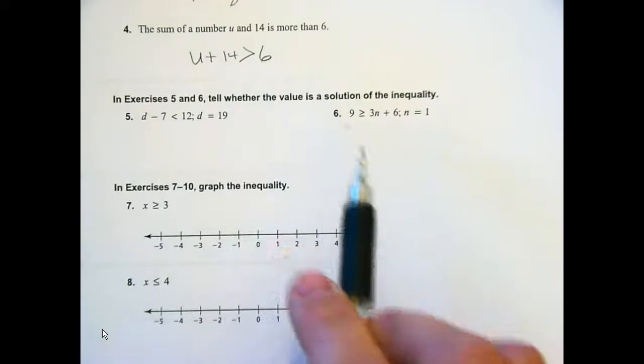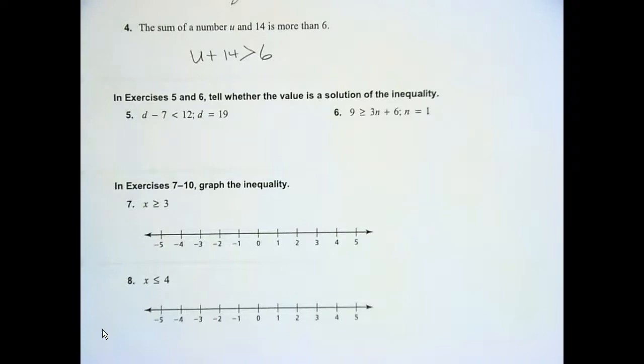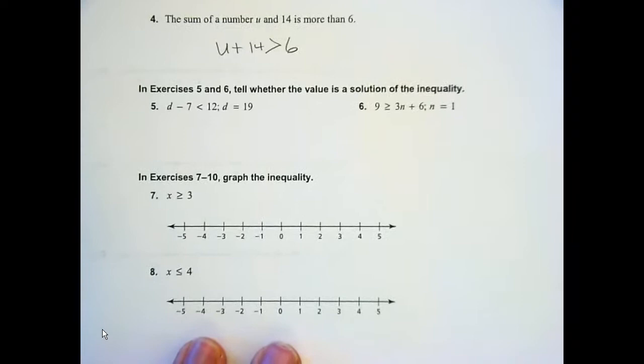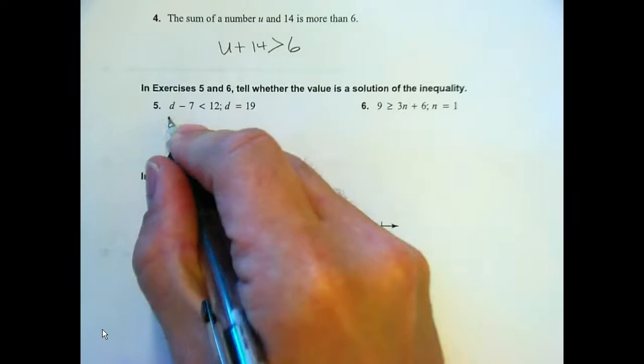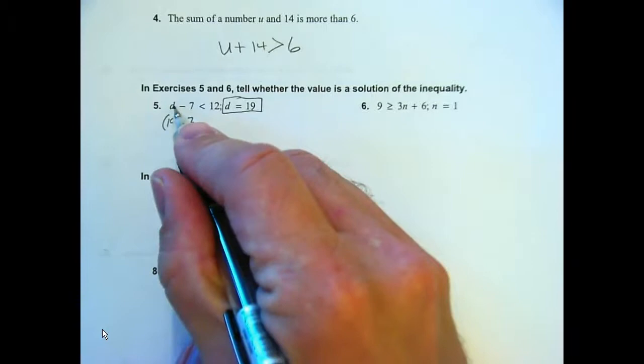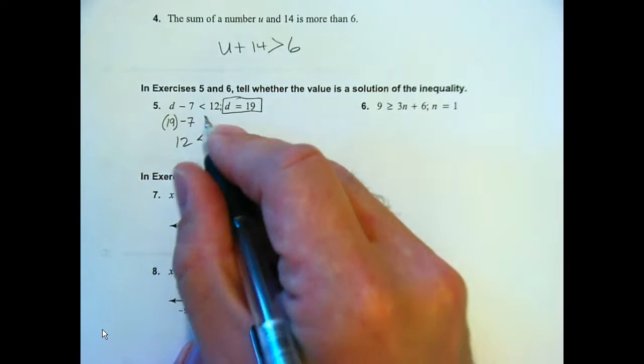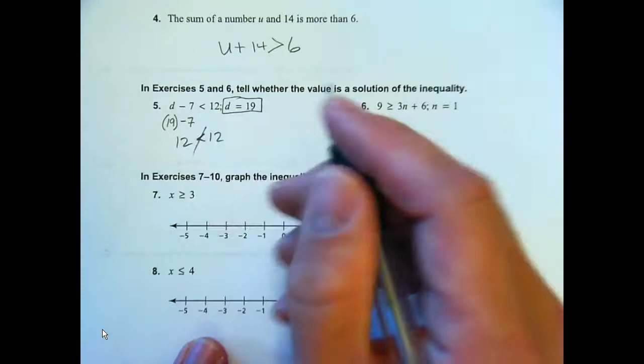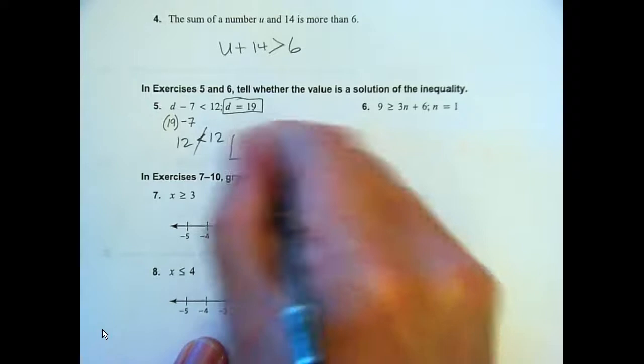All right. Let's see where we're at. Tell whether the value is a solution. So we're testing it, right? Bless you. Man. Someone's allergic to something. I'm allergic to nothing. Yay. Kellen, what do you think for number five? Yes or no? Number five. I said false. False? How did you come up with false? Because of me. I said false. Okay. Good. So you have to put that 19 in for the D. So 19 minus 7 is 12. And as Kellen says, 12 is not less than 12. It's equal to. So this is false. We just put a slash through it saying it's not equal to. That means not equal. So it's false. You can write no.